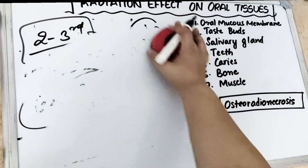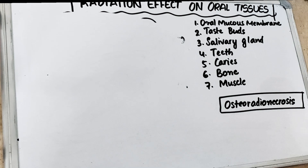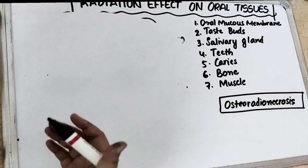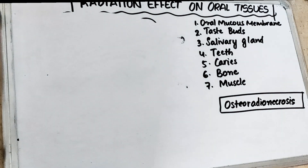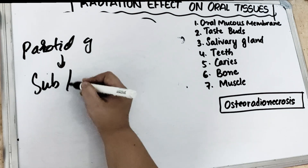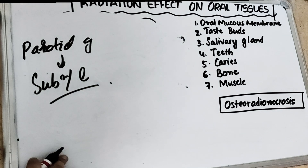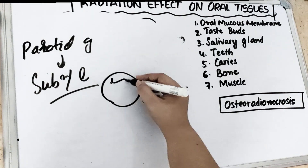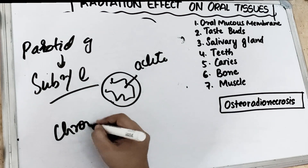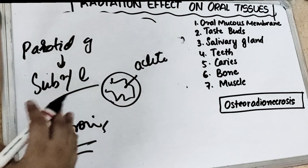Regarding the salivary glands: ductal and acinar cells are actually radioresistant, but the salivary gland unavoidably gets exposed. Changes are mostly seen in the parotid gland, and the second most common are the submandibular and sublingual glands. The parenchymal component of the salivary gland is the radiosensitive component. In serous acinar cells, we see inflammatory changes — initially acute inflammation and later chronic inflammation. Immediately after exposure, acute inflammatory reaction occurs in serous acinar cells.